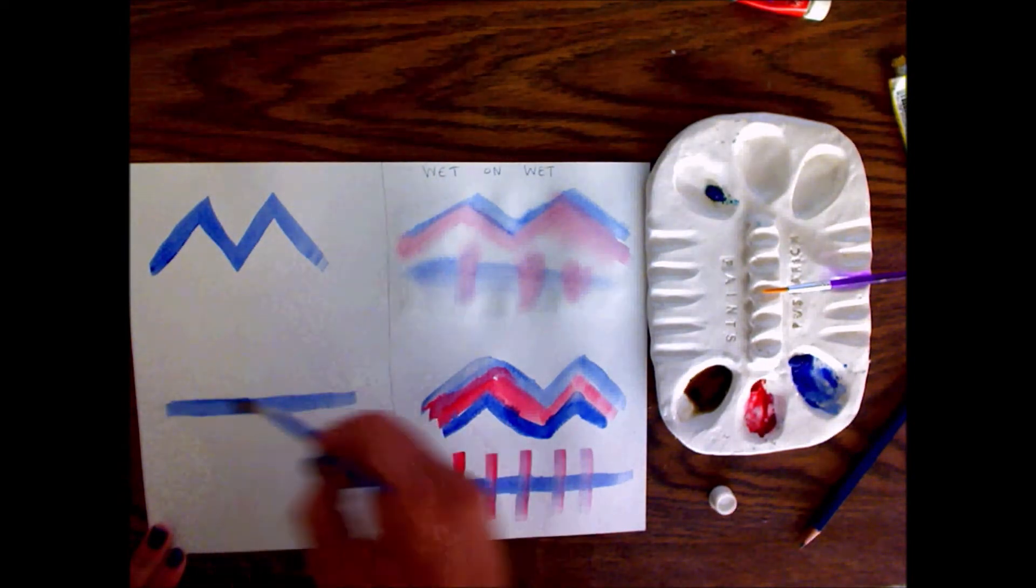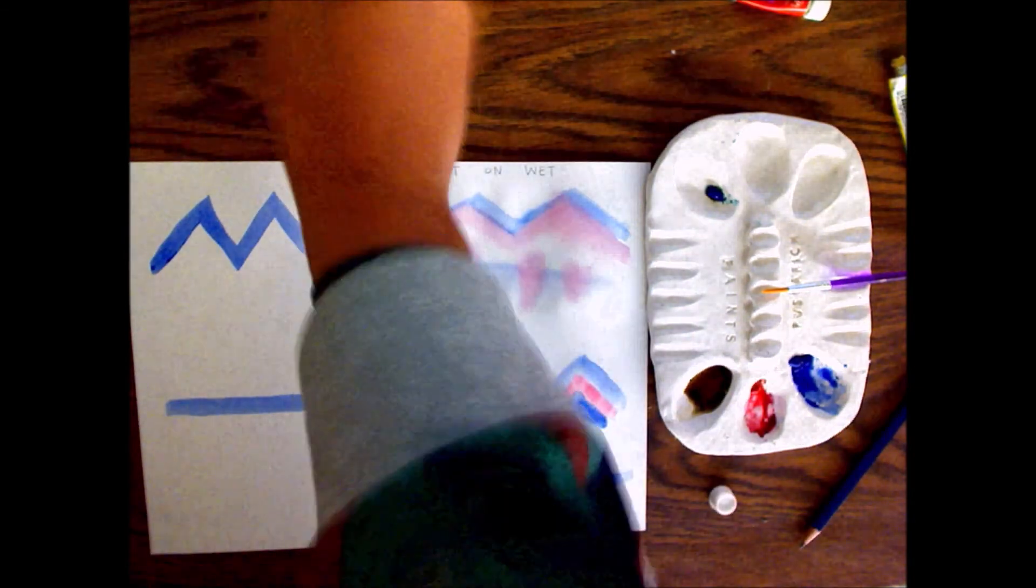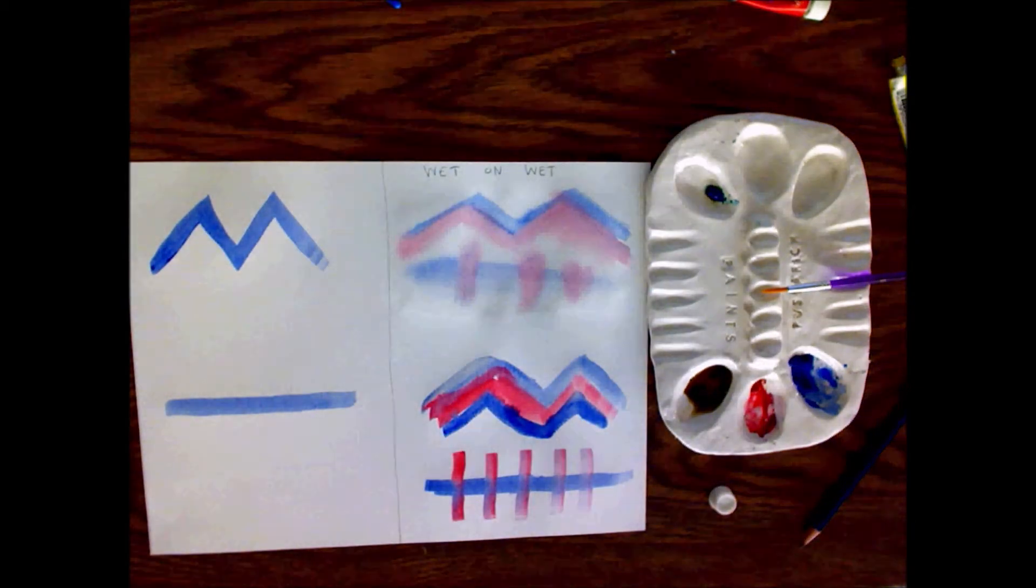On the left side of my paper, I'm going to paint wet on dry, but I'm going to allow my paint to dry before I paint next to it. So this is wet next to dry, wet paint next to dry paint.